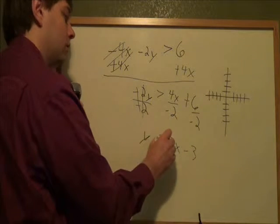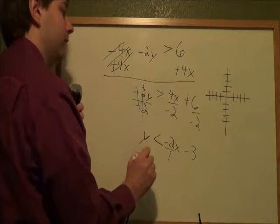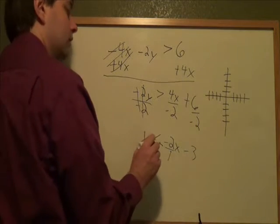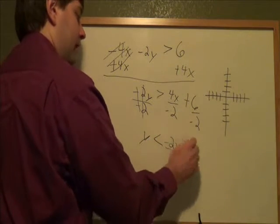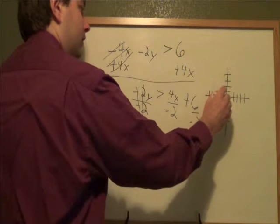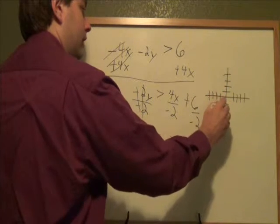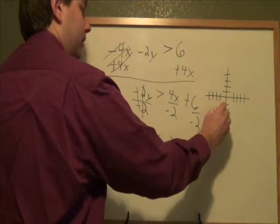So now we have y is less than negative 2x minus 3. Remember, if you have a whole number slope, put it over 1 to make it easier to graph. So first point, we've got a minus 3 by itself. From the very middle of the graph, we go down 3 and put the first point down.